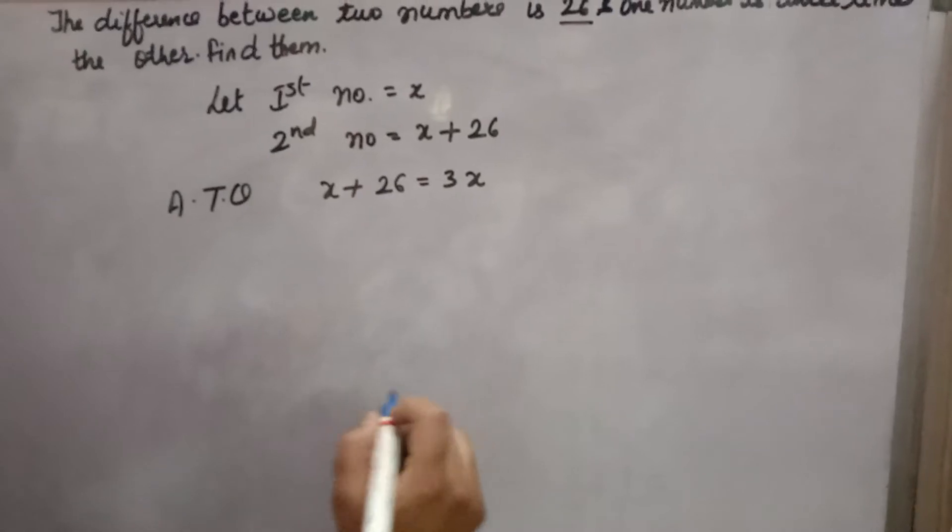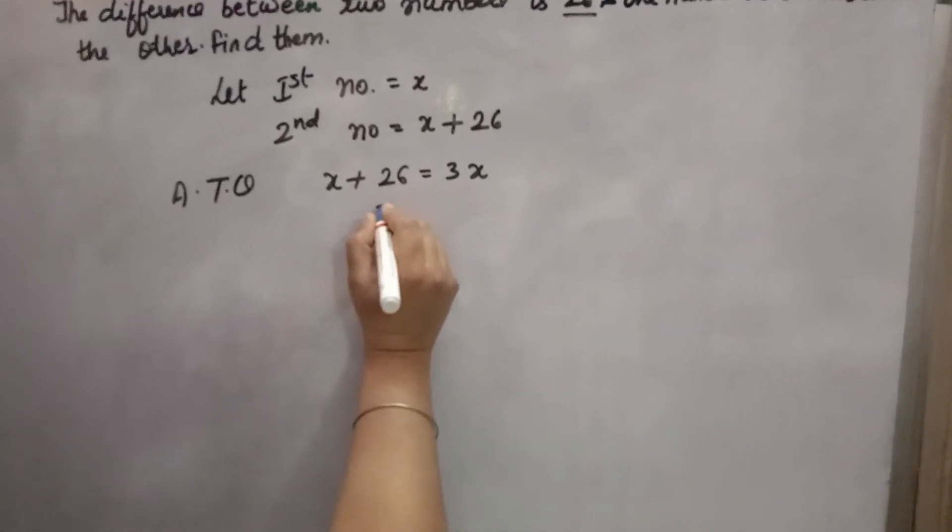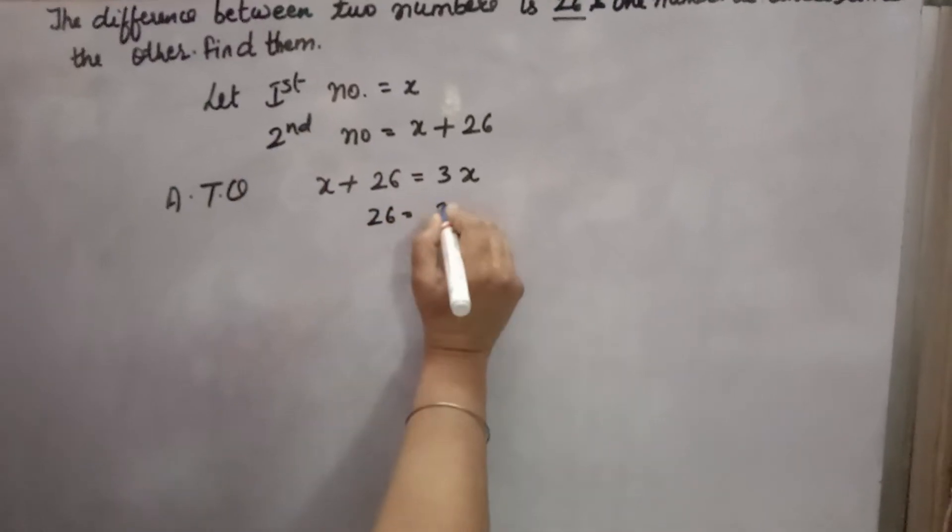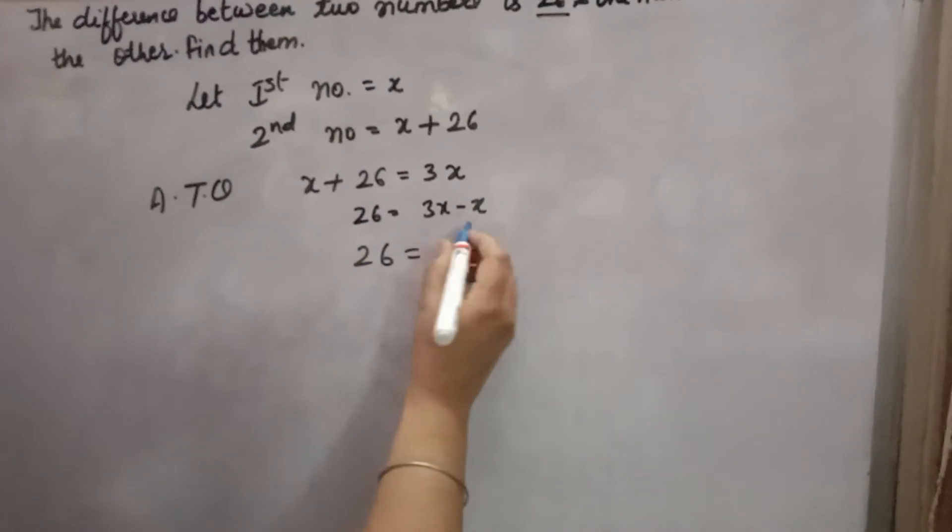Now x plus 26 equals 3x. So x will come, 26 will come equal to 3x minus x. Take x to that side, 26 will come equal to 3x minus x, that's 2x.